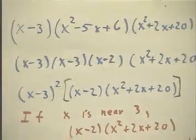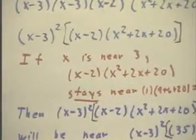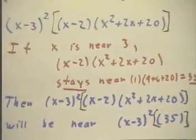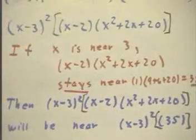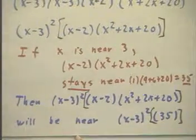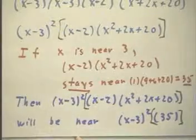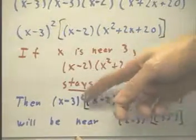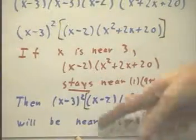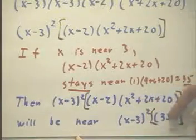In that case, since this stays near 35, (x-3)² times all this stuff is going to stay near 35(x-3)². So near x=3,